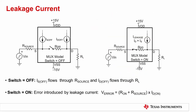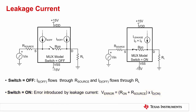This slide shows the simplified model of MUX leakage current flow when the switch is on and when it is off. When the switch is off, IS off flows through the source impedance at the input, and ID off flows through the drain pin through the load resistor connected to the output. When the switch is on, we can approximate leakage current flowing through the source and drain pin to be equal; that is, IS on equals ID on. The voltage error introduced by the leakage current at the input side when the switch is on is: V error equals R on plus R source times ID on.